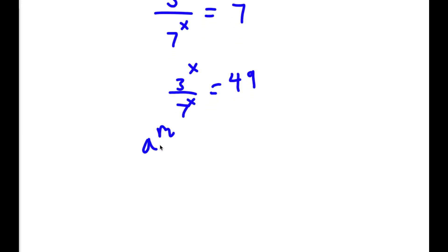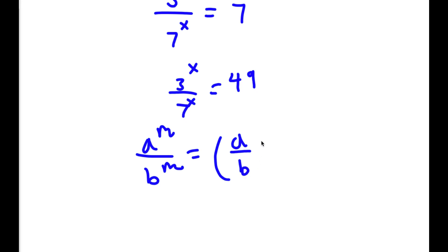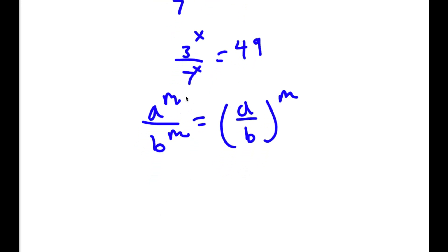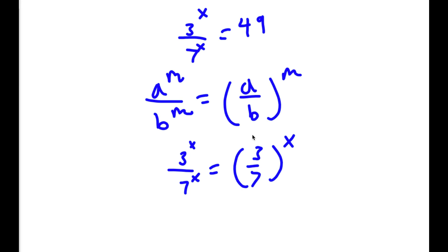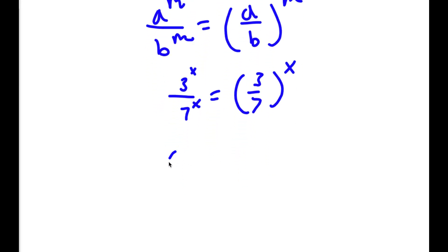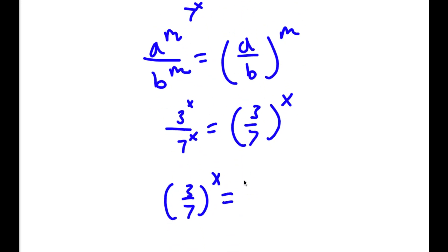If I have something in the form a to the power of m over b to the power of m, this is actually equal to a over b to the power of m. So right here, 3 to the power of x over 7 to the power of x is going to equal 3 over 7 to the power of x. So now I have 3 over 7 to the power of x is equal to 49.